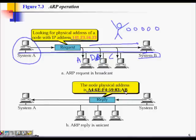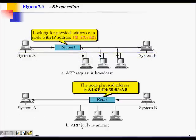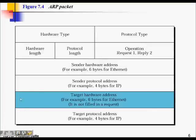System B replies with its six-byte MAC address: A4:6C:F4:59:83:AB. This is how MAC addresses are written in human-readable format — each byte in hexadecimal, separated by colons. The ARP request is broadcast — sent to everyone — and the ARP reply is unicast — sent only to the requester.